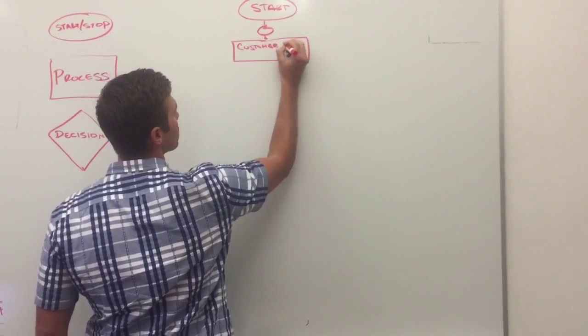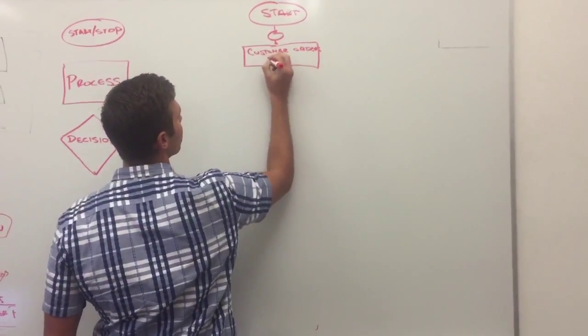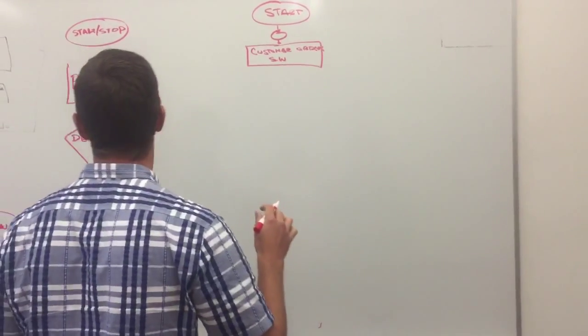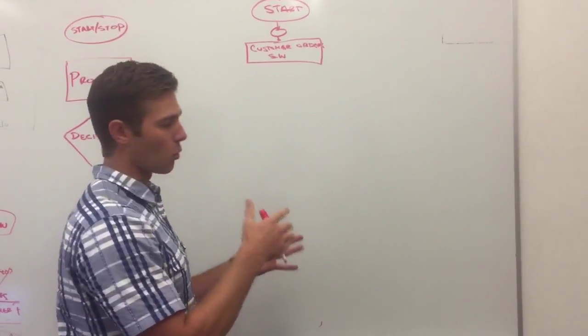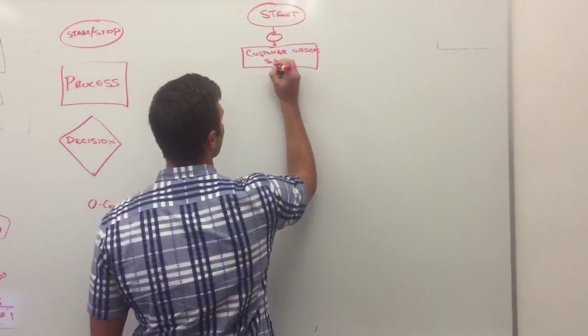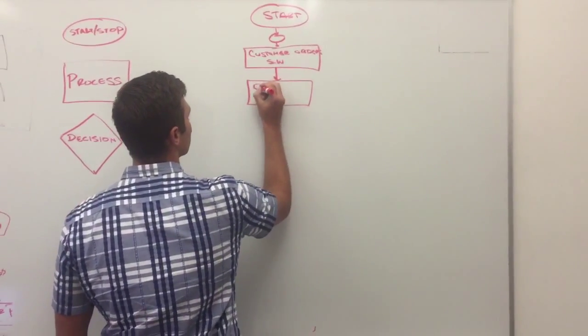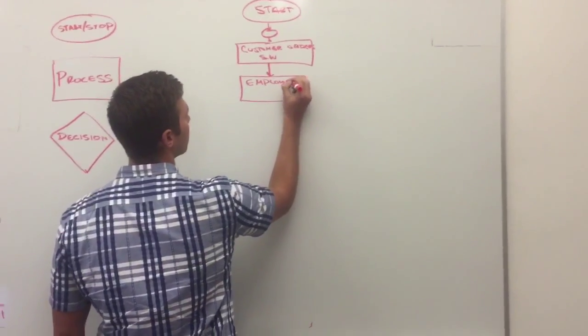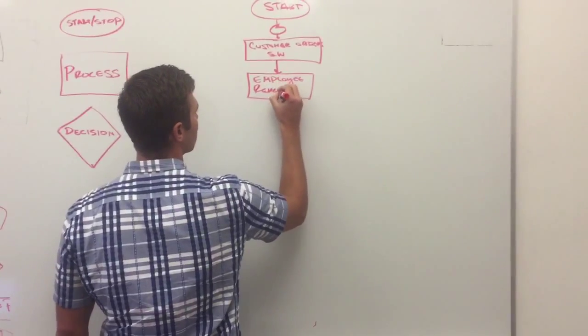So customer orders, going a little out of the lines there, a sandwich. From that point, what we're going to do is the customer is going to give that order to an employee, and the employee is going to review the order. So that goes through another process, and the employee review order.